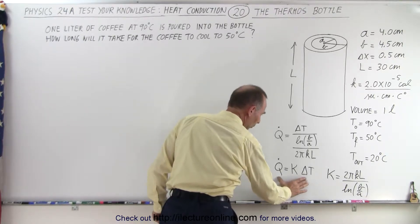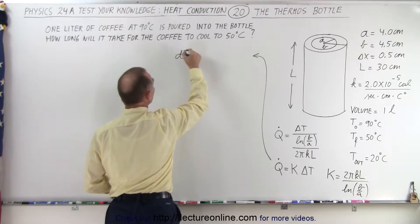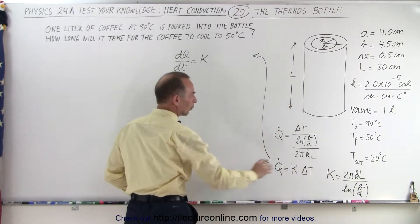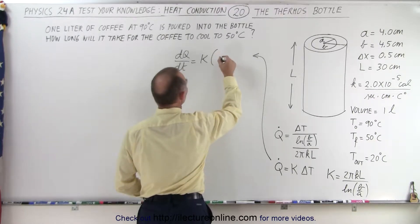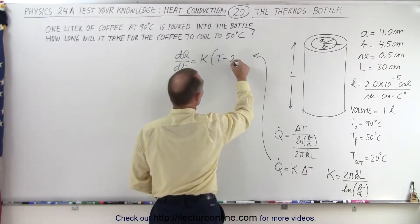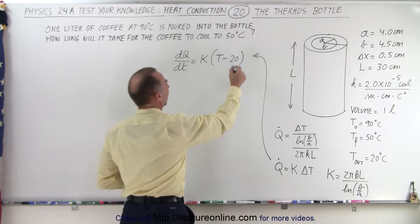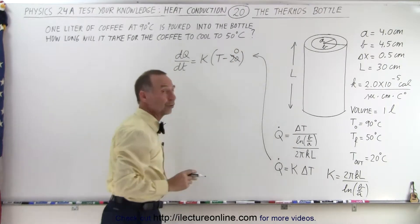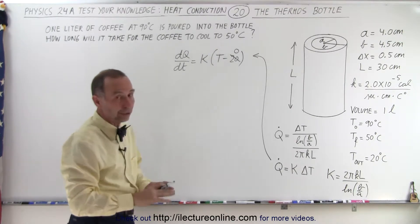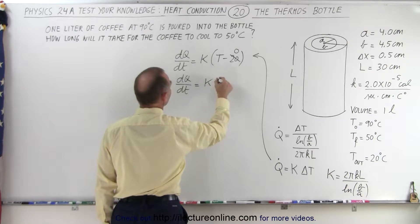So we have dQ/dt equal to capital K — which equals 2πkL over the natural log of b over a, all constants — times ΔT. Since the outside temperature is 20 degrees, we could write T minus 20, but to simplify we set the outside temperature as zero degrees, so T-initial becomes 70 and T-final becomes 30. That means our equation dQ/dt can now be written simply as K times T.